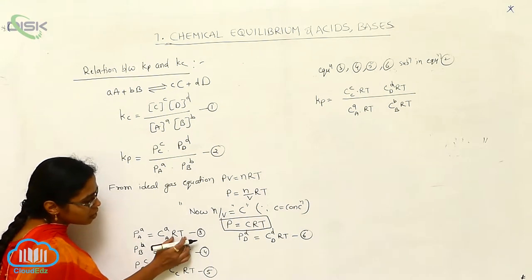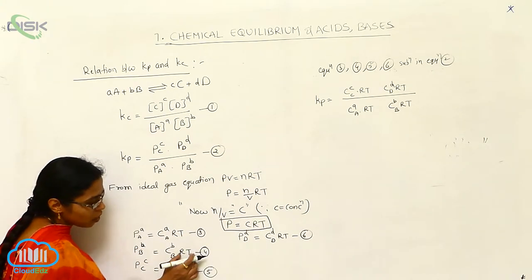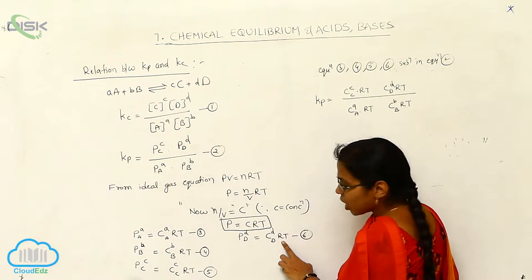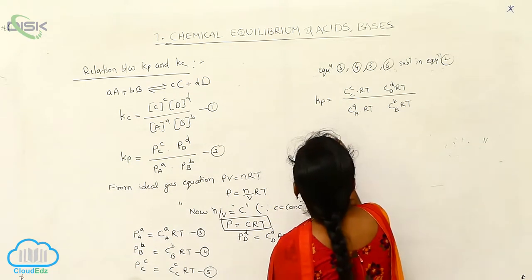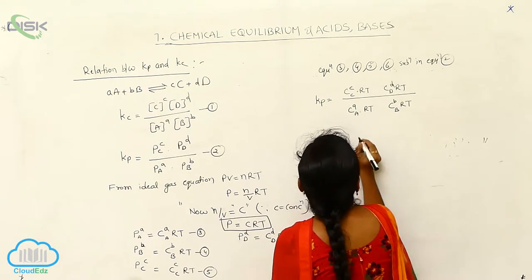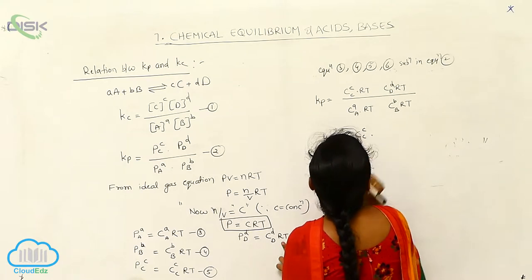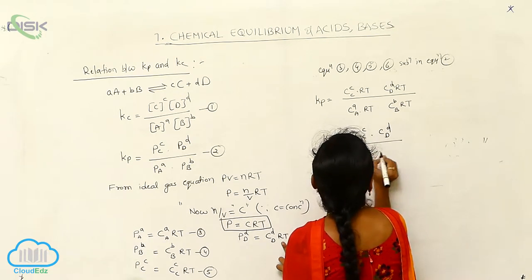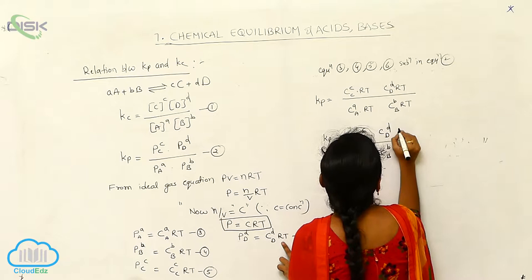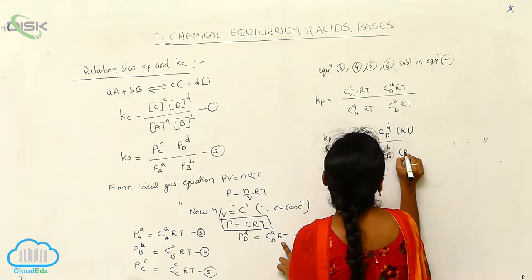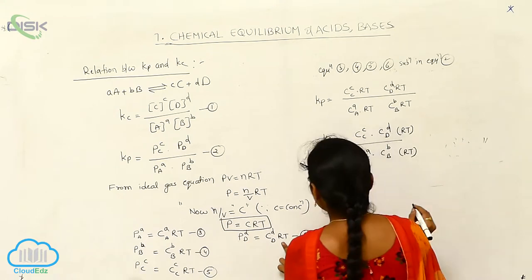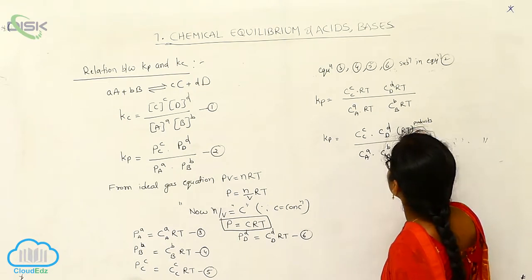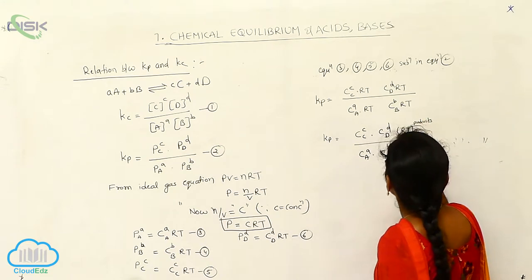Whenever we are substituting the gas constant R and T for each component: for A we get C_A·R·T, for B we get C_B·R·T, for C we get C_C·R·T, and for D we get C_D·R·T. So I can write here C_C, C_D for the products and C_A, C_B for the reactants, along with the R·T terms.